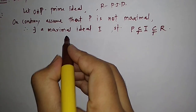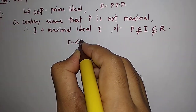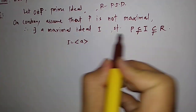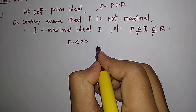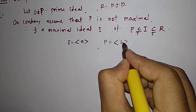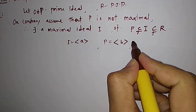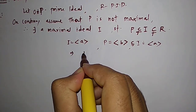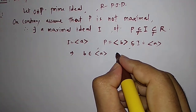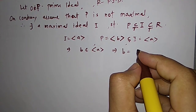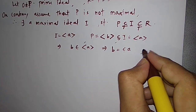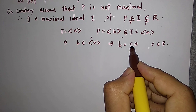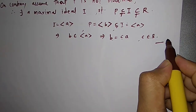Since R is a PID, we know that I is actually generated by a single element — let's say I = (a). P is also a prime ideal, so P is also generated by some single element b, and we know that P is strictly inside I = (a). That means b belongs to the ideal generated by a, so b has to equal c times a for some c in R. Let us call this equation (1).